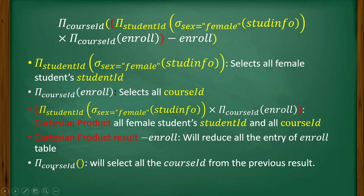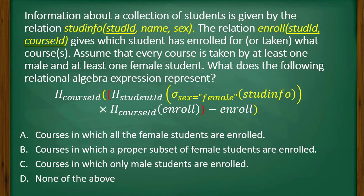Finally, we project course ID from that result. This selects all course IDs from the previous result — specifically course IDs taken by female students. The result gives courses in which a proper subset of female students are enrolled. So the correct answer is option B.